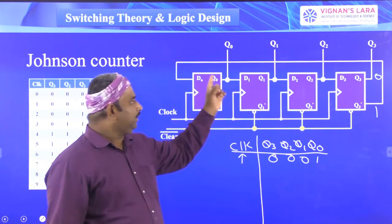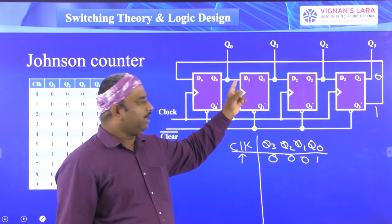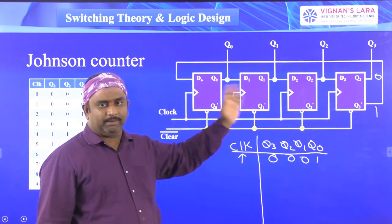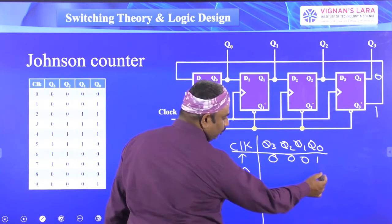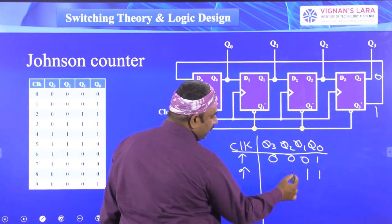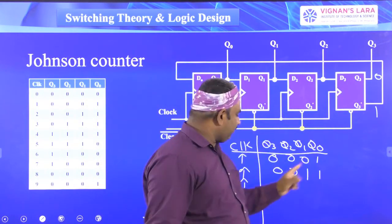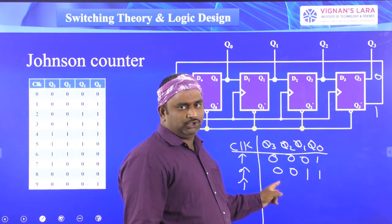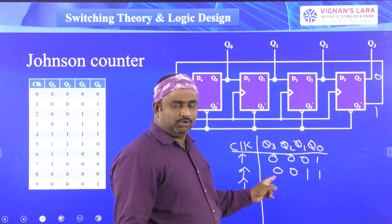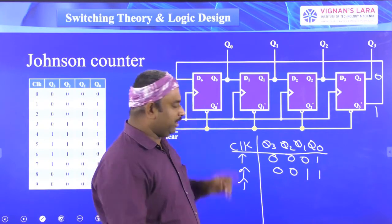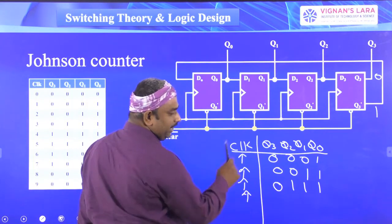D0 is 1, D1 is 1, D2 is 0, D3 is 0, so the input is 1-1-0-0. After applying the second clock pulse, the output becomes 1-1-0-0. For the third clock pulse, Q3 is still 0, so D0 is again 1. The output becomes 0-1-1-1, showing the shifting operation as 1s propagate through the register.